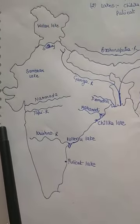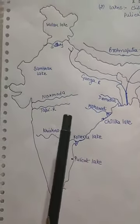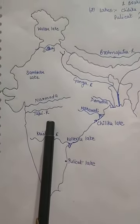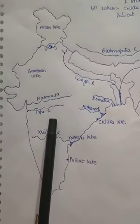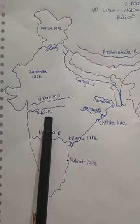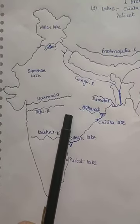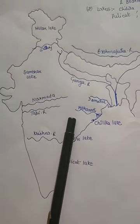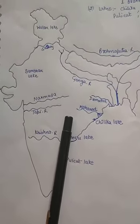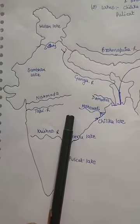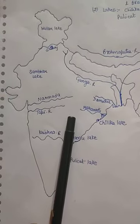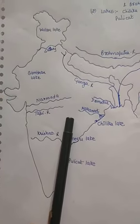Next is the Tapi river. Basically, the Tapi rises in the Satpura ranges in the Betul district of Madhya Pradesh, and it also drains into the Arabian Sea.